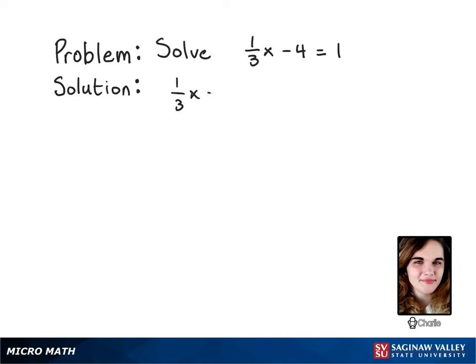1 third x minus 4 equals 1. The first thing I'm going to do is move the minus 4 over by adding it to both sides. So it cancels on the x side.